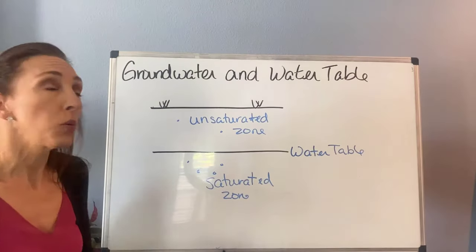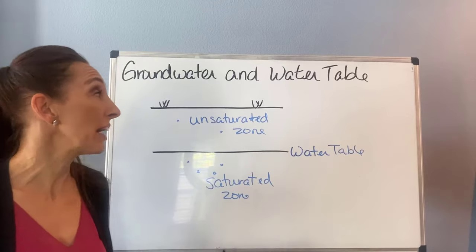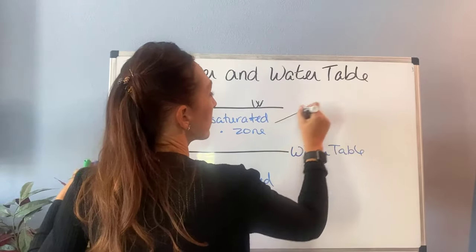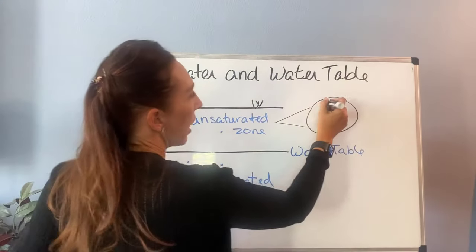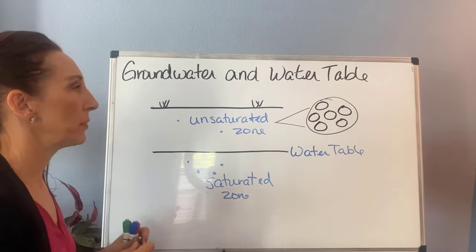The unsaturated zone is exactly what it sounds like: it's not saturated, meaning there's still some air left over. If I were to draw a picture of what this looks like, let's say this is all sand. I would have my sand grains, and I'm going to leave big spaces in between to make it easier to see.